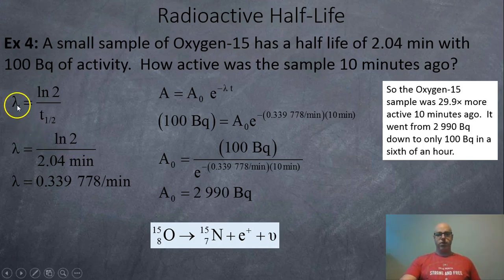So another backwards question. This time we use the decay constant. So we got ln 2 divided by 2.04 minutes, so that's 0.339778 per minutes. We're going to plug that into the activity half-life equation.